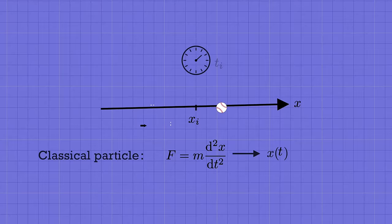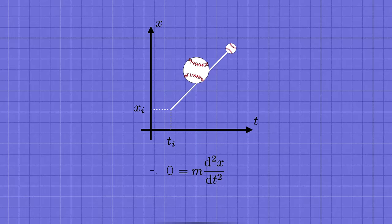And then solve this equation for the position x as a function of the time t. If it's a free particle, then the solution to this equation is just a straight line. Or if it's a baseball that we're throwing up in the air, the trajectory would be a parabola.